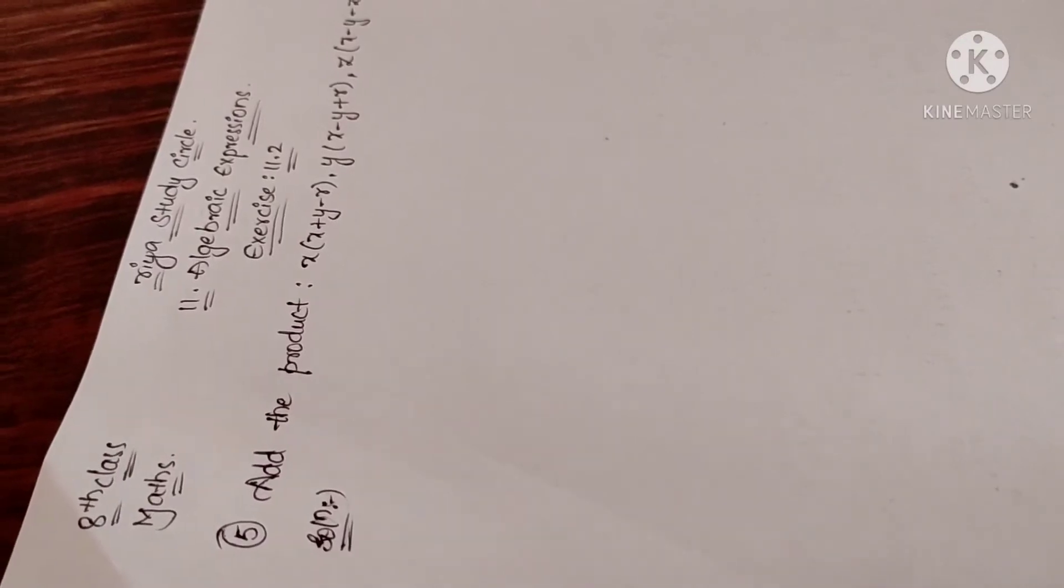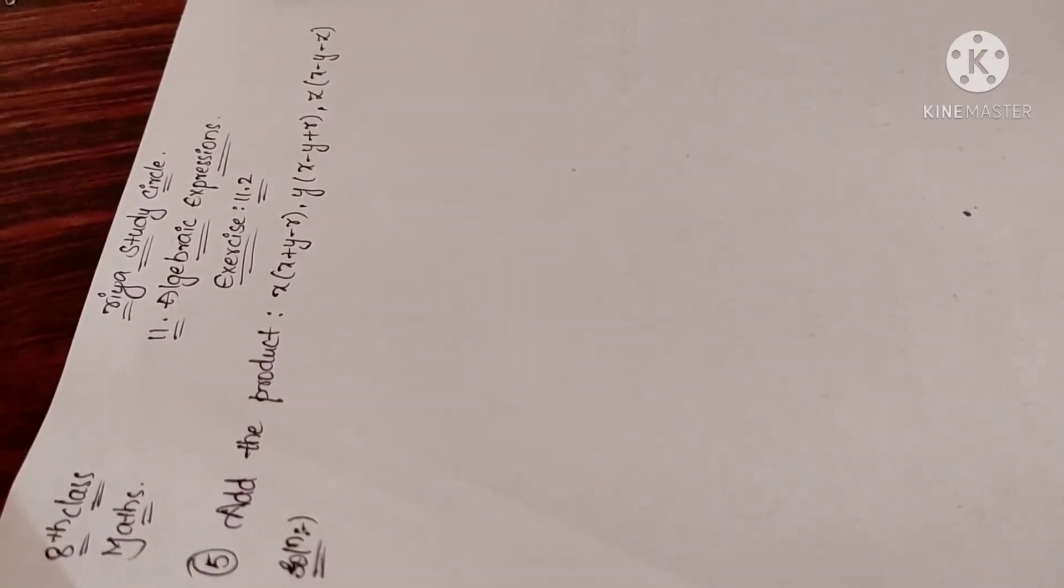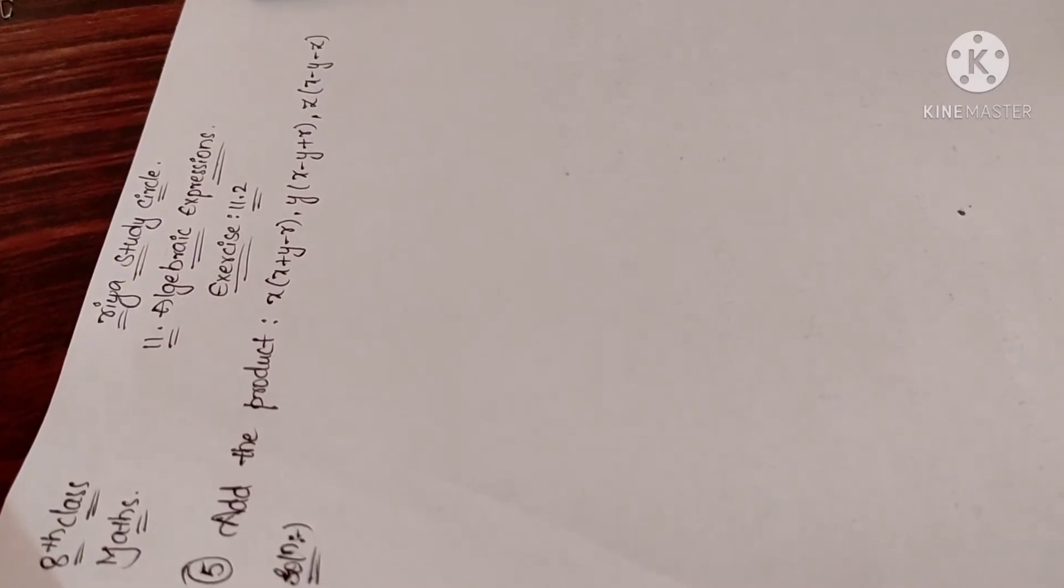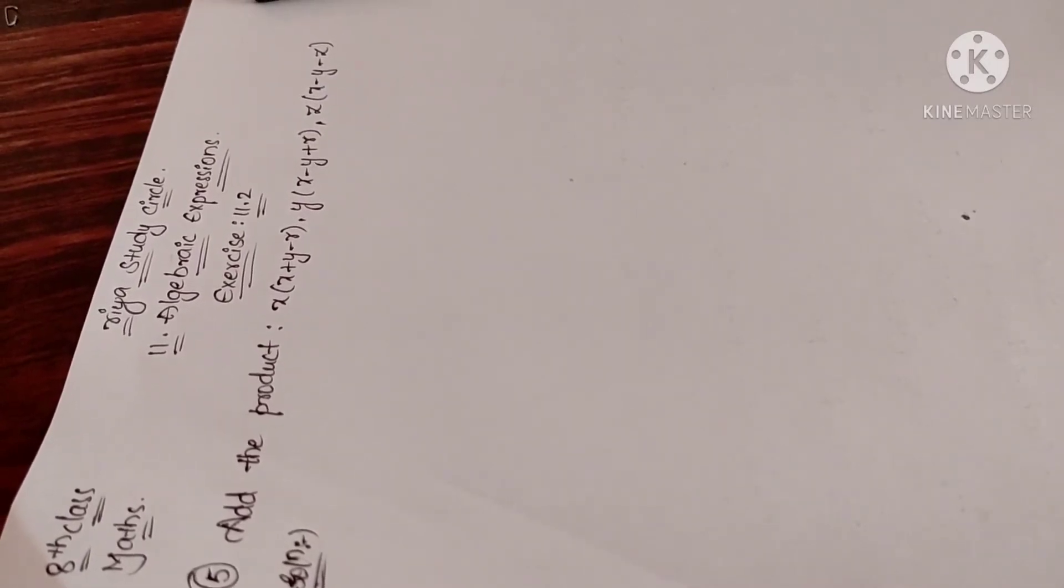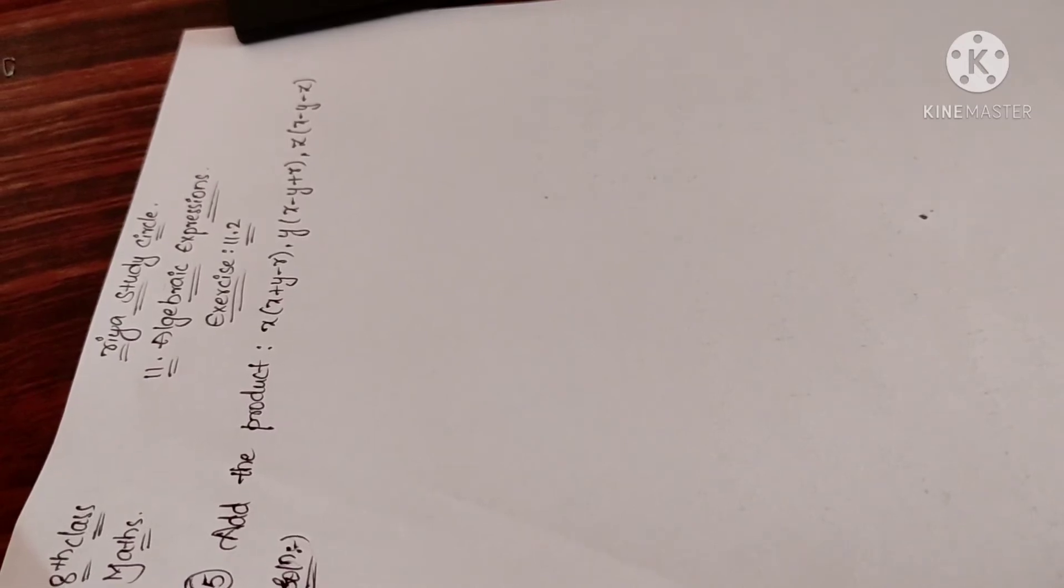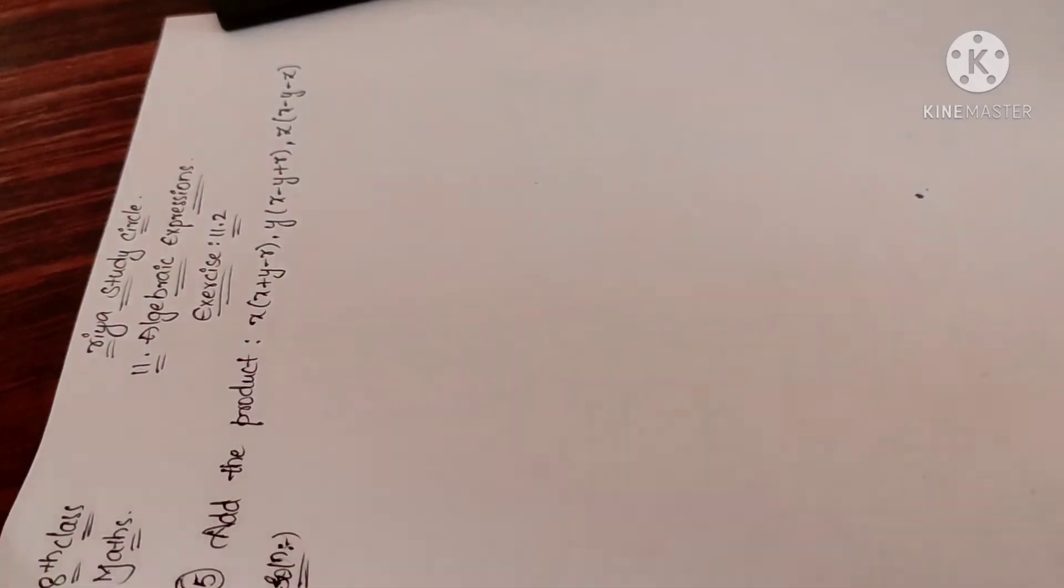The problem is: Add the product x into x plus y minus r, y into x minus y plus r, and z into x minus y minus z. I already told you two methods in previous videos. Here I am just using one method, that means the first method.